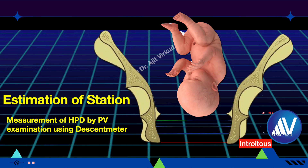Now, measurement of head-to-perineum distance by pervaginal examination using an instrument called a descent meter will be discussed. This involves measuring the distance of the leading bony point up to the introitus — it is like measuring station in reverse. The lesser the value, the greater the descent of the head into the pelvic cavity.